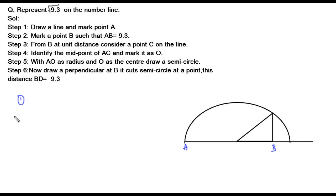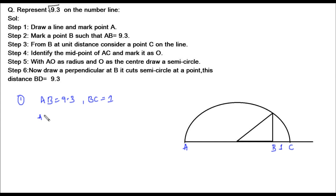So AB equals 9.3 units. From point B, we take a point C such that BC measures 1 unit. Therefore, AC equals AB plus BC, which is 9.3 plus 1, giving us AC equal to 10.3 units.